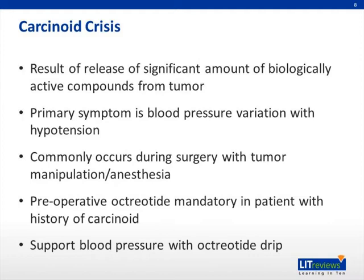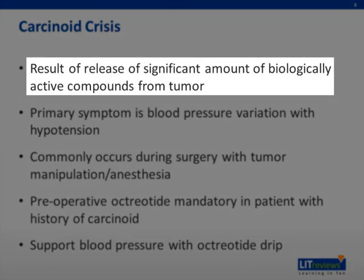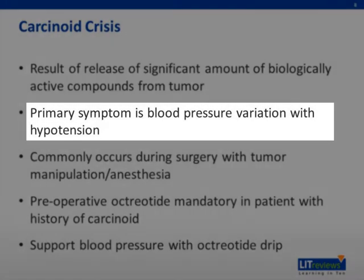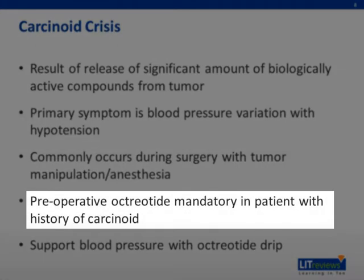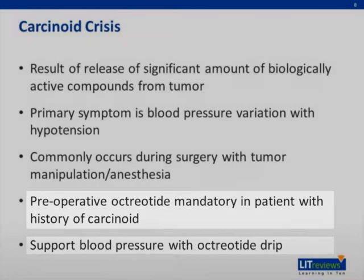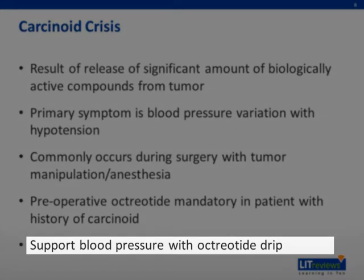In extreme scenarios, the patient can undergo a carcinoid crisis. This is the result of a significant amount of biologically active compounds secreted by the tumor. Commonly, one will notice blood pressure variations with the presence of hypotension during this crisis. This is most commonly noted during surgery while the tumor is being manipulated. Because of this, any patient undergoing an operation for carcinoid should have preoperative octreotide, and should the patient become unstable during surgery, an octreotide drip can be used for support.